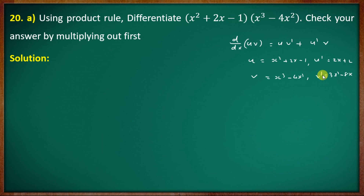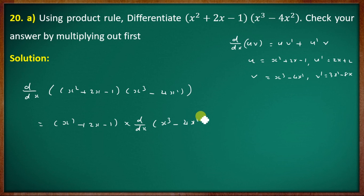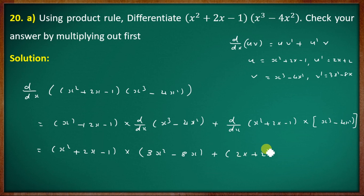We define u = x² + 2x − 1 and v = x³ − 4x². Applying the product rule: (x² + 2x − 1) · d/dx(x³ − 4x²) + d/dx(x² + 2x − 1) · (x³ − 4x²). The derivative of the first part is 2x + 2, and of the second part is 3x² − 8x.